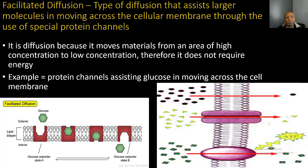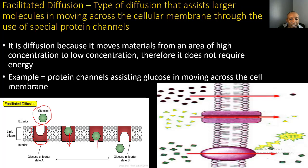Facilitated diffusion is a type of diffusion that assists larger molecules in moving across the cellular membrane through the use of special protein channels. It is still diffusion because materials move from an area of high concentration to low concentration, so it does not require energy. An example is protein channels assisting glucose in moving across the cell membrane. The protein channel takes on a specific shape to fit the glucose molecule, allowing it to travel from high concentration outside the cell to low concentration inside the cell.